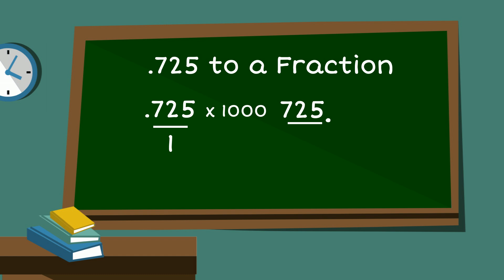Now, what we do to the numerator, we need to do to the denominator. So we'll multiply 1 by 1,000, or we could just add three zeros. 1, 2, 3. Now we have 725 over 1,000.